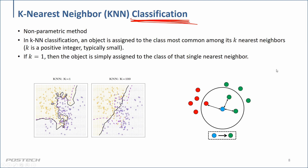So for k-nearest classification, given a new observation, pick the k nearest data points, see whether their labels are red or green, and do majority voting. Based on that, you can decide the class.